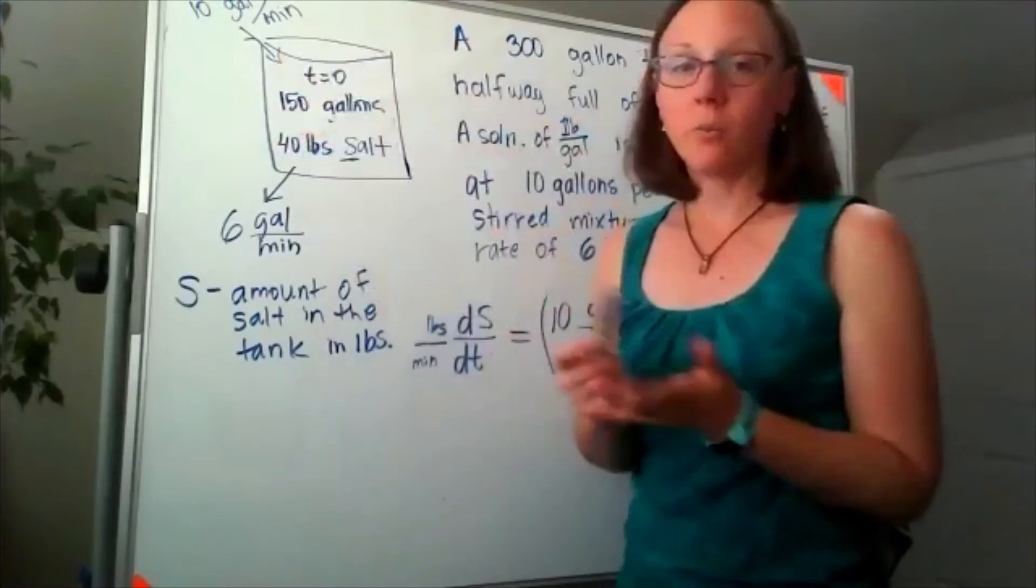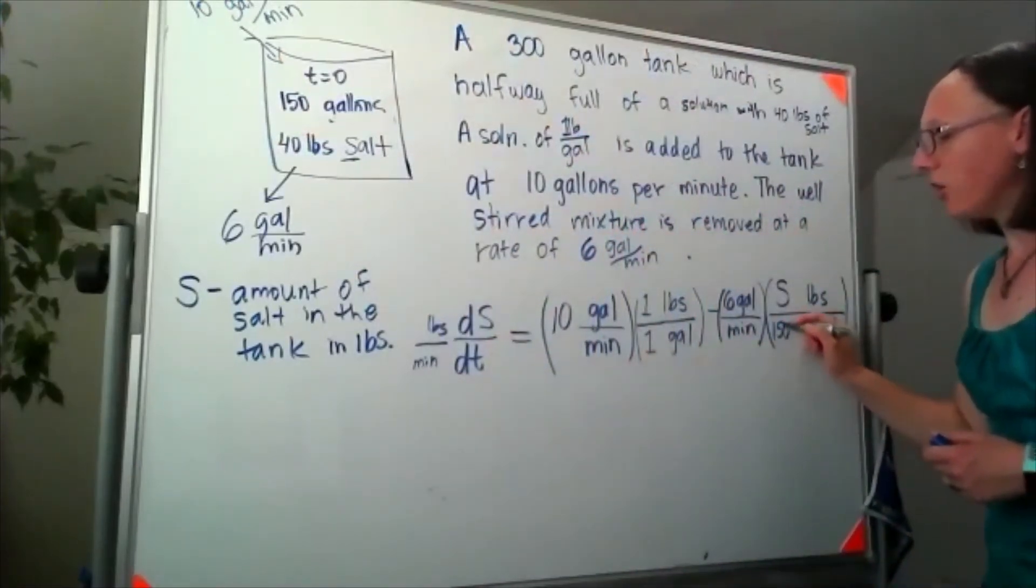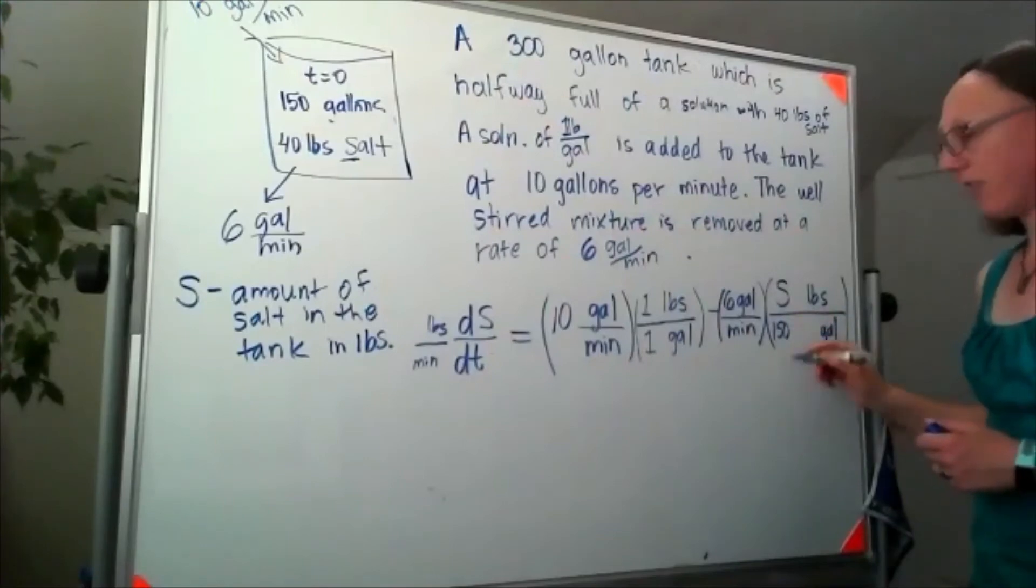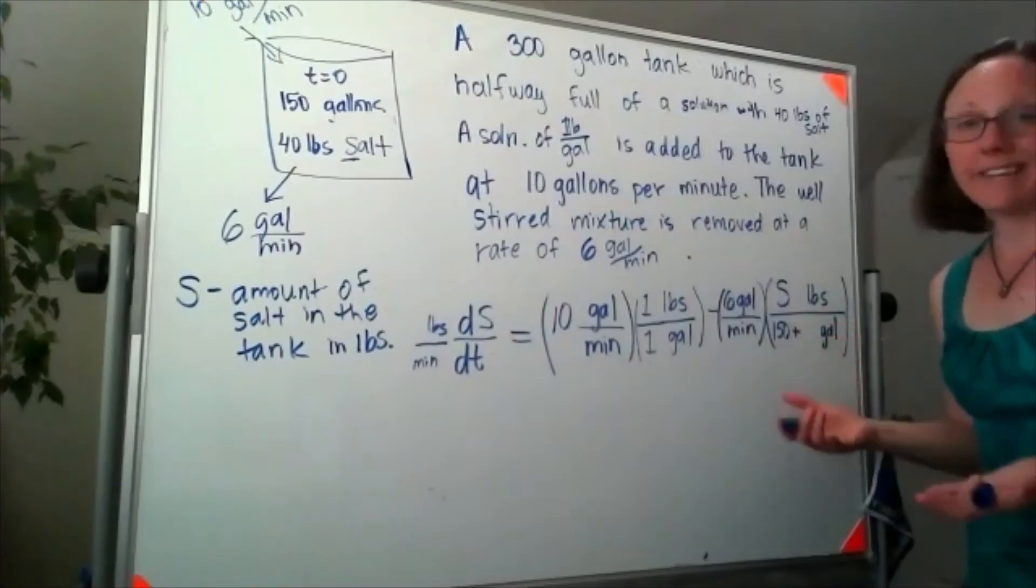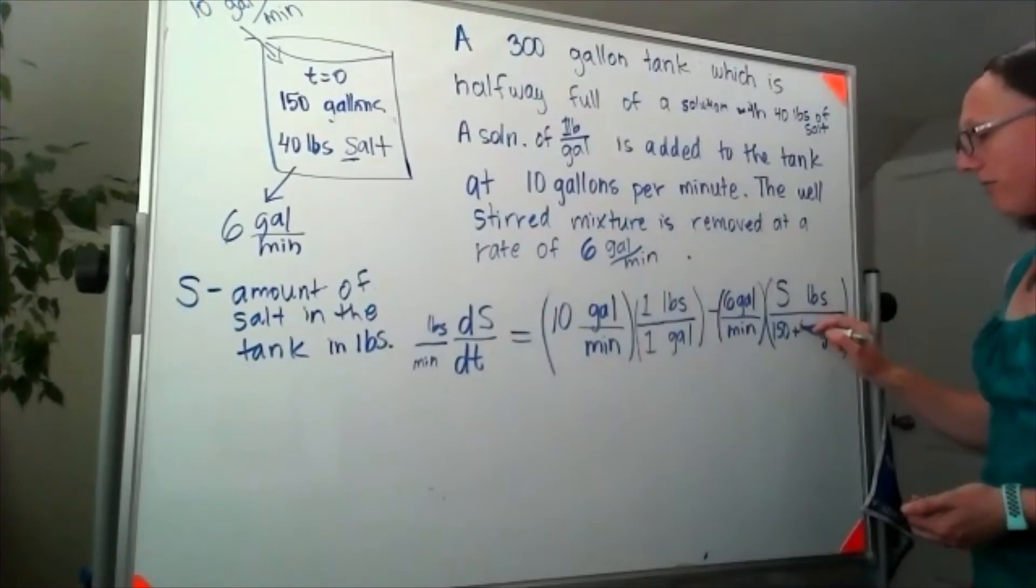Although I started with 150 gallons, that now means that I have those initial 150 gallons, and then each minute, or t, I'm adding four more gallons. So this is gonna look like 150 plus 4t.